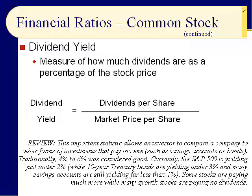Traditionally, 4% to 6% dividend yield was considered good. Currently the S&P 500 is yielding just under 2%, 10-year treasury bonds under 3%, and many savings accounts still under 1%. Some stocks pay much more — look at Ford and GM, they're paying very healthy dividends. AT&T and Verizon — the telecommunications companies — are what I like to call the yield hogs.